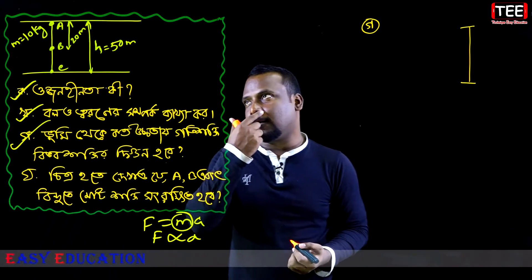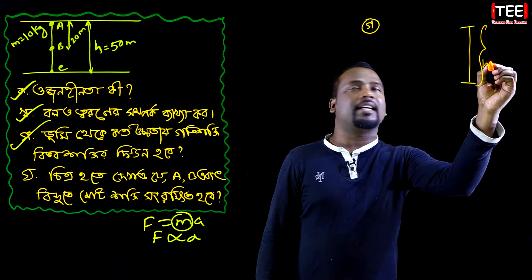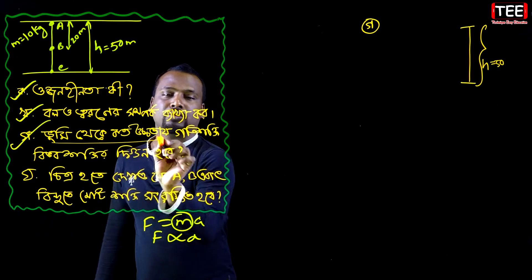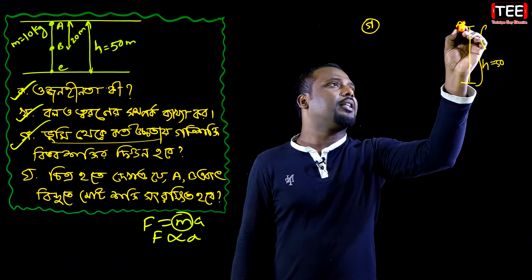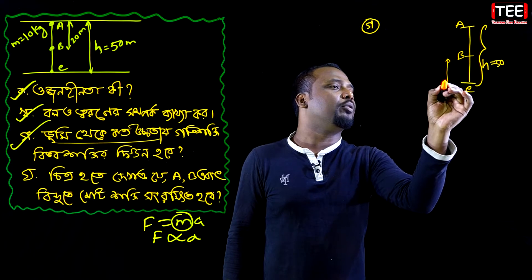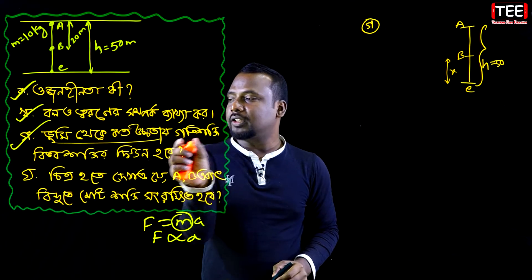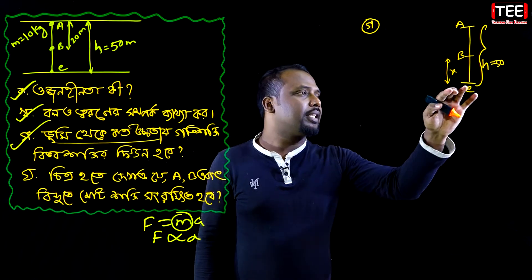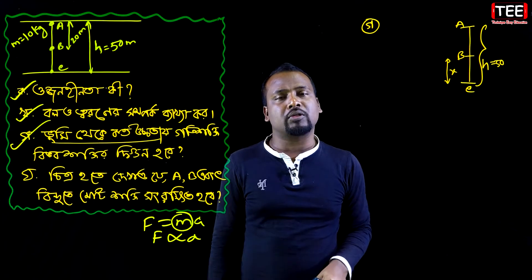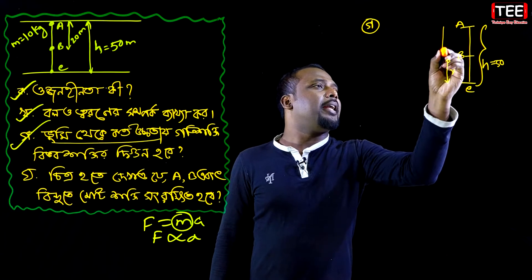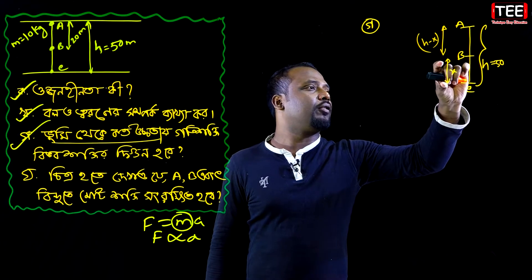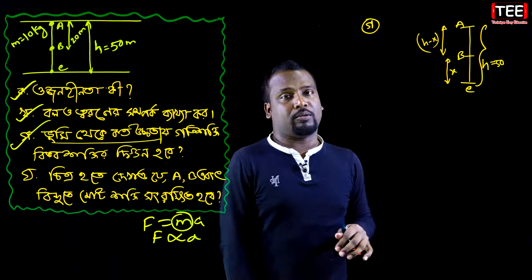First of all, the height of this is 50 meters. The height of this is 50 meters. Our question is: how much is the earth? After A is the first one, the height of this is C and the width is 2. So, a minus x — you will find x.